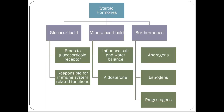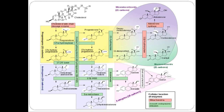Now let's talk about steroids. Steroid hormones are broken into three categories: glucocorticoids, mineralocorticoids, and sex hormones like androgens, estrogens, and progesterones. We can cross out sex hormones for this lecture — we'll cover those in men's and women's health topics. All steroids share the same base — they're all derived from cholesterol molecules and converted into other forms like cortisol, aldosterone, progestins, and androgens.